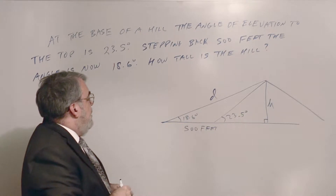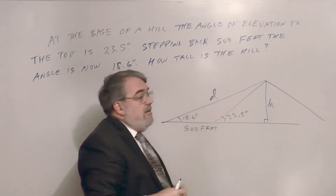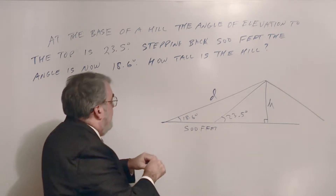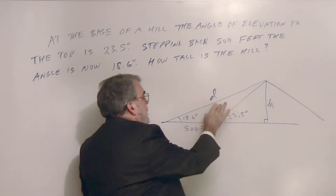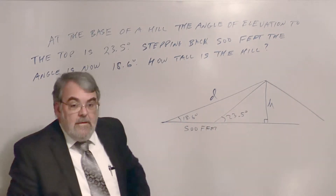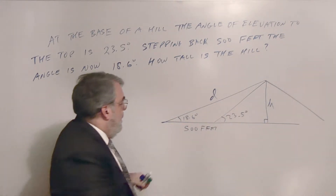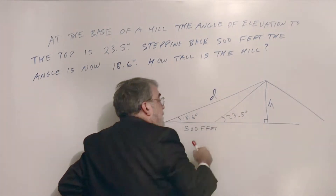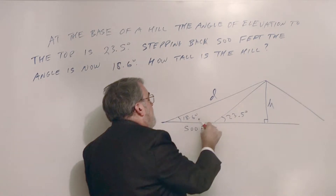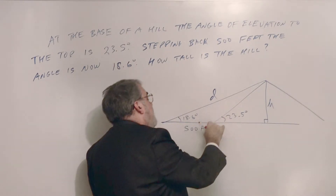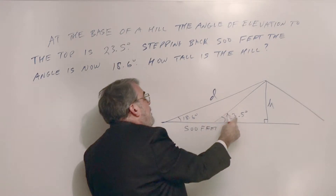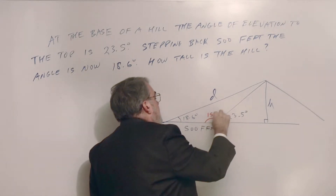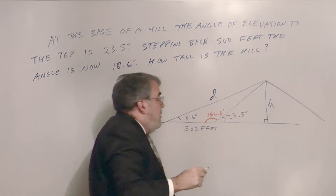If I figure out the distance D from the farther point to the top of the hill, I can calculate the height using sine of 18.6 degrees equals height divided by that length. Now, this angle inside the triangle is supplementary to 23.5 degrees, so 180 minus 23.5 gives 156.5 degrees.